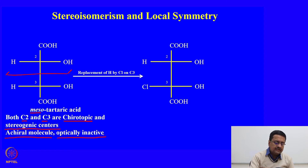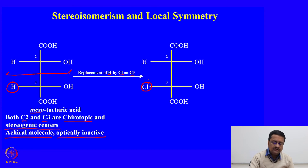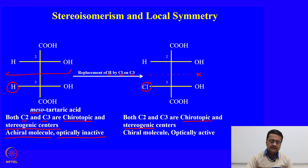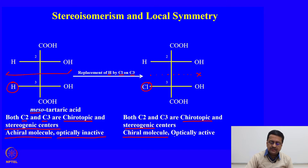Now, what we are trying to do is replace the H by chlorine on C3. This hydrogen is now replaced by chlorine on C3. What has happened is that both C2 and C3 are as before chirotopic and stereogenic, but the mirror plane which was present before is now absent. Therefore, this molecule is converted to a chiral molecule and is optically active.